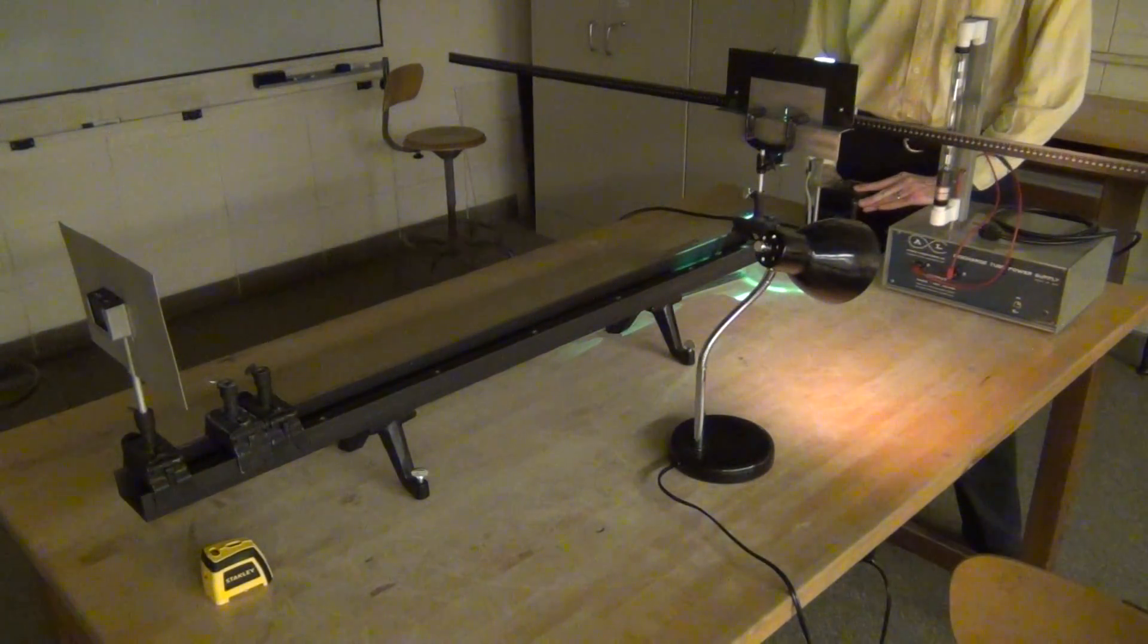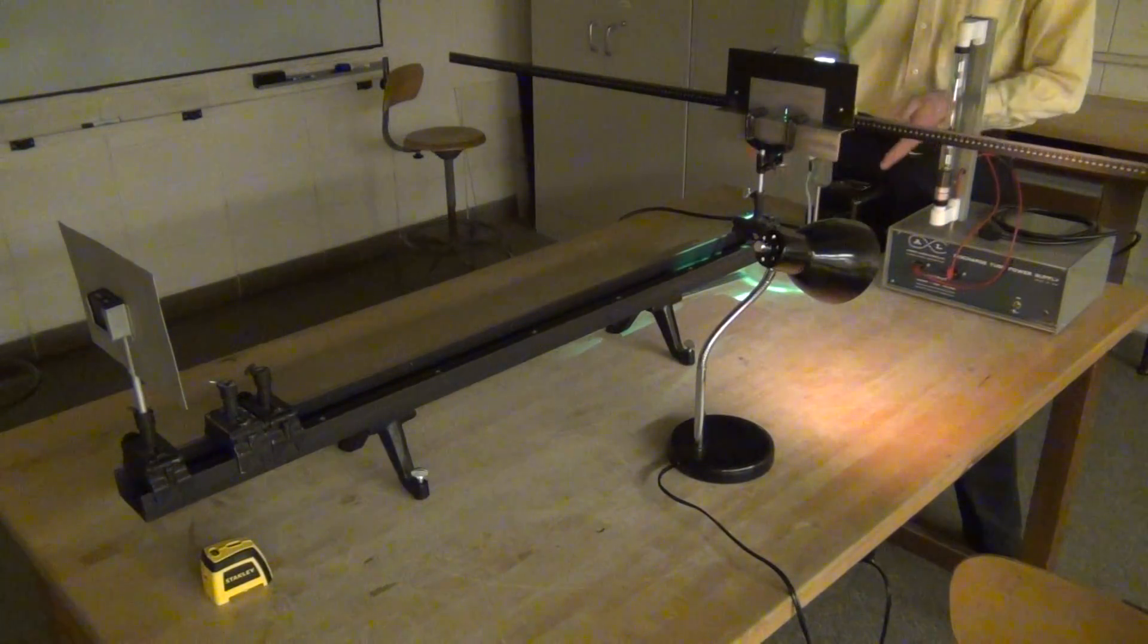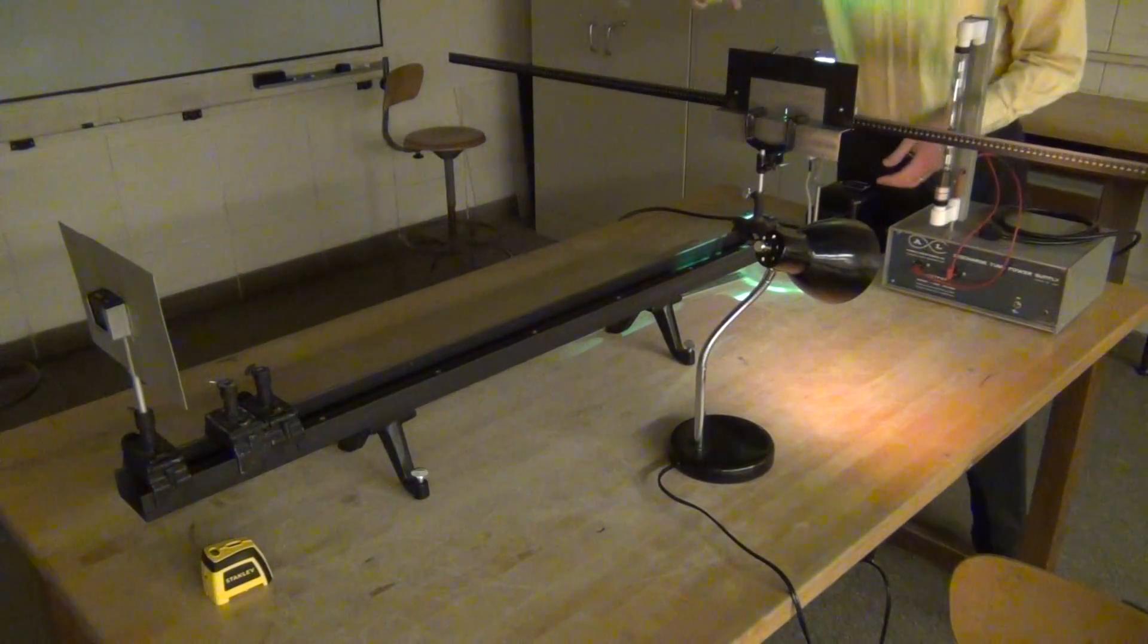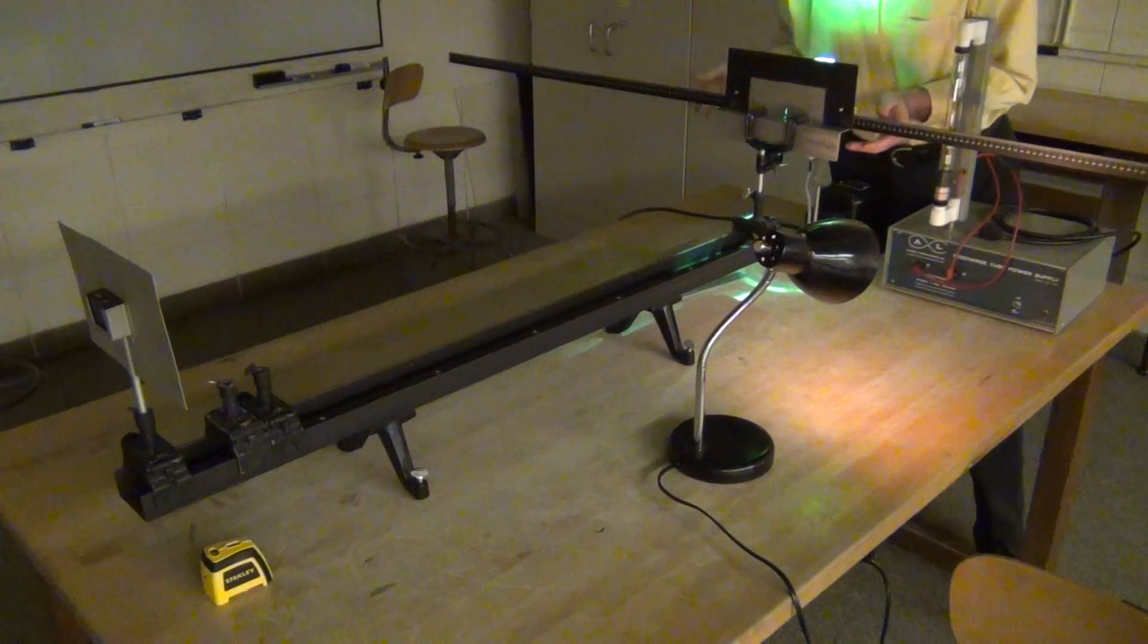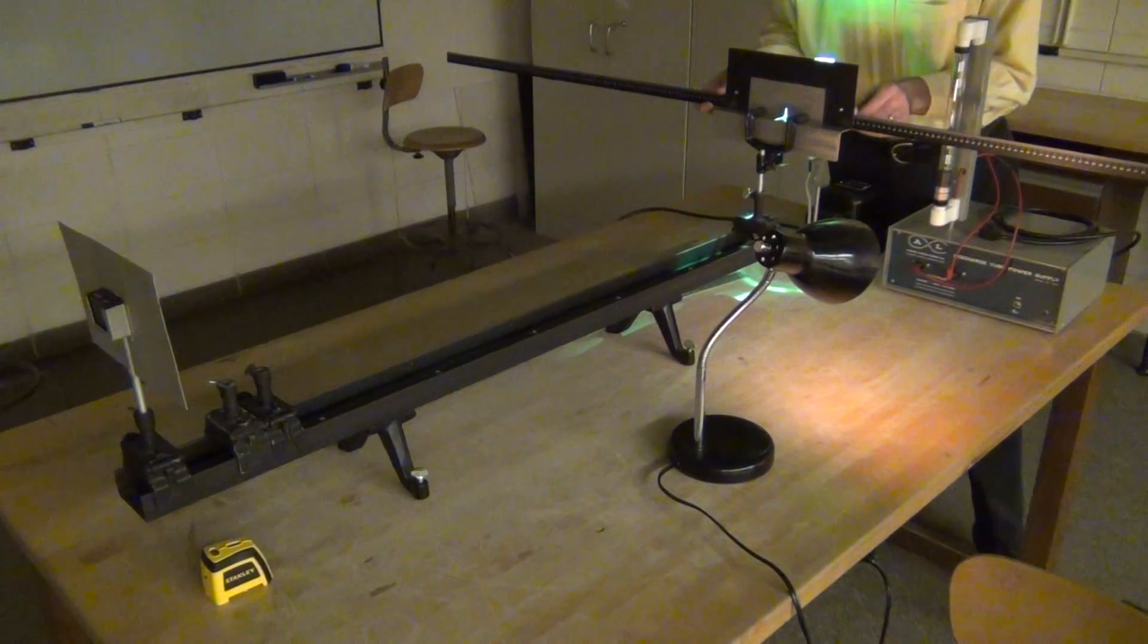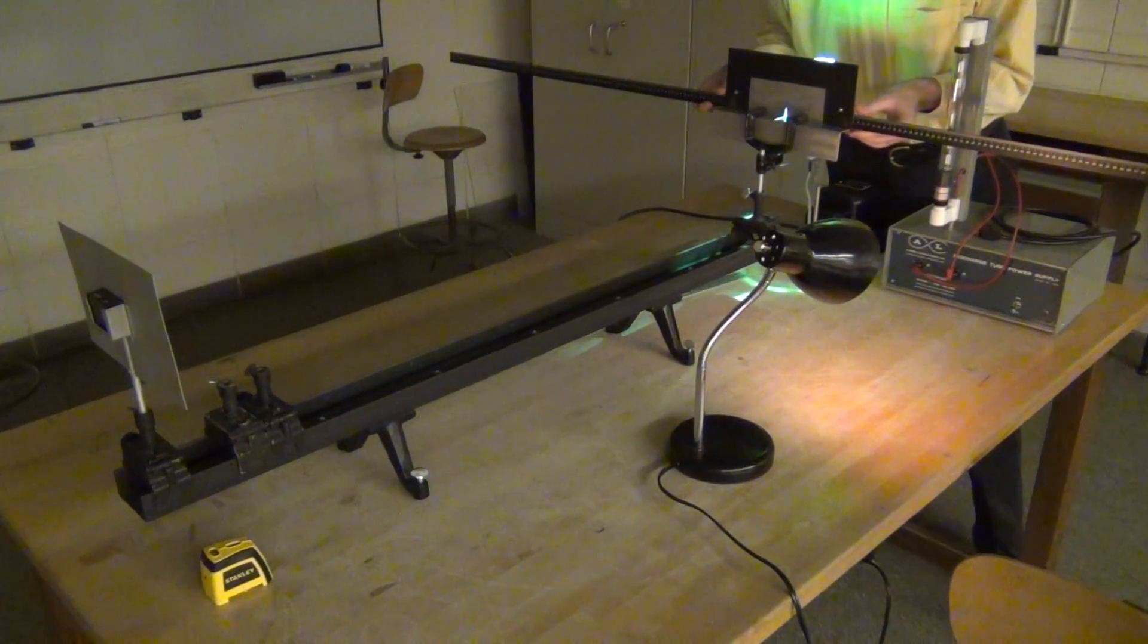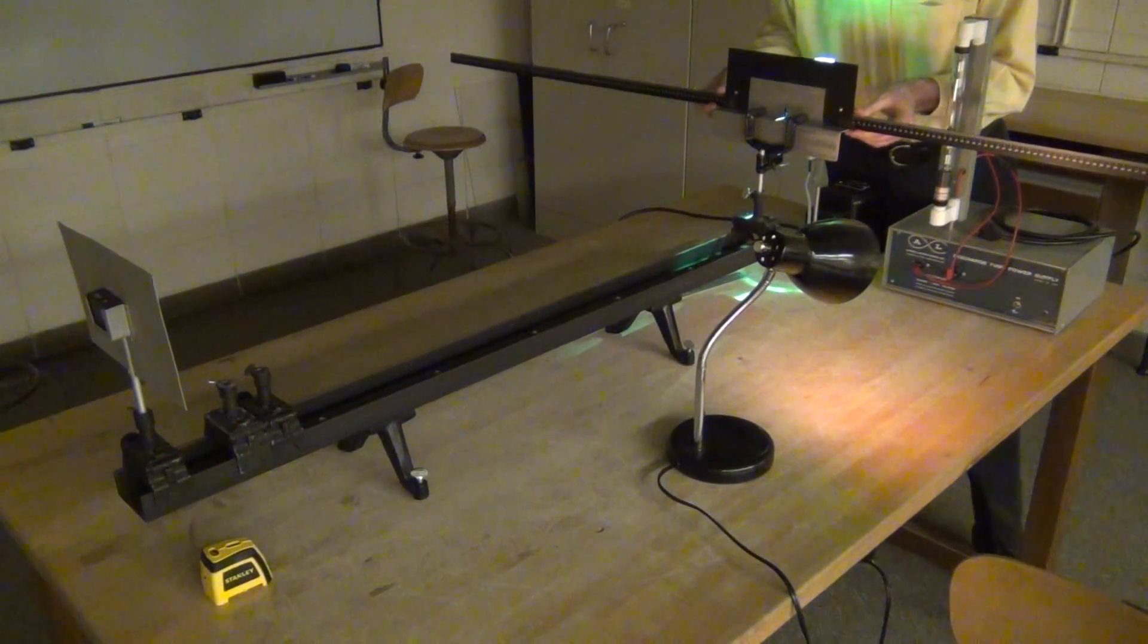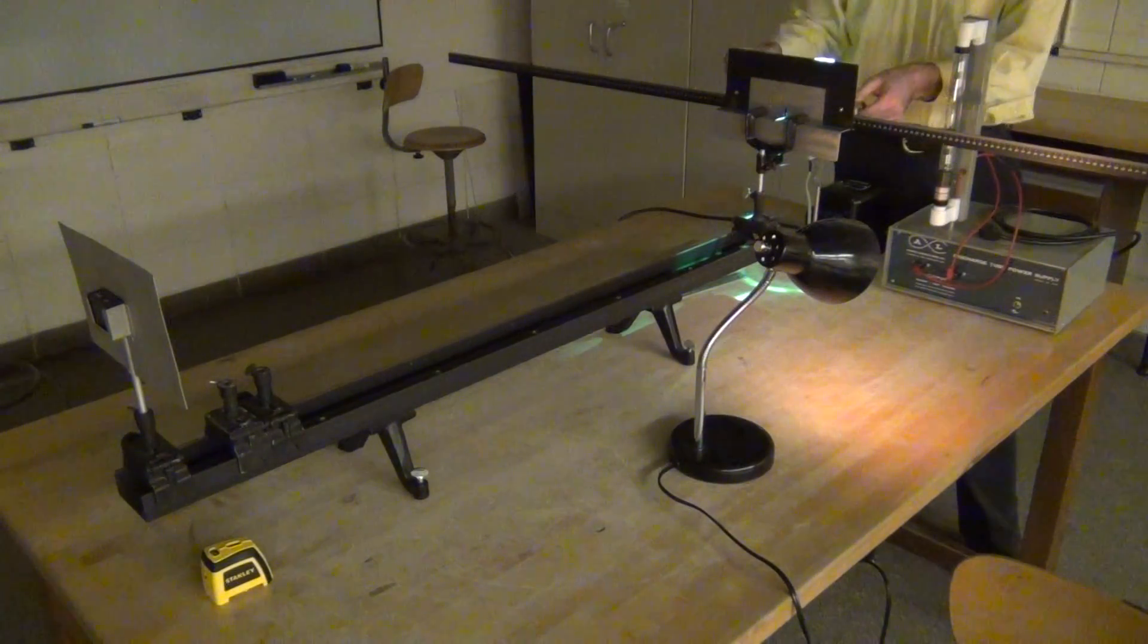So we move the mercury light in line with our slit and we want to see a little bit of that light coming through as a thin line on the aluminum of the holder.